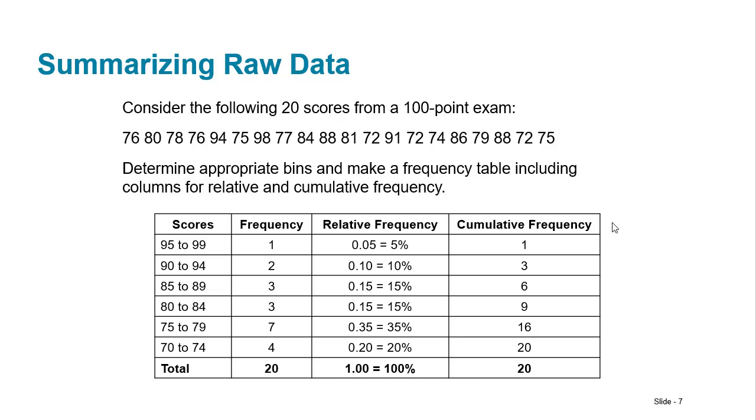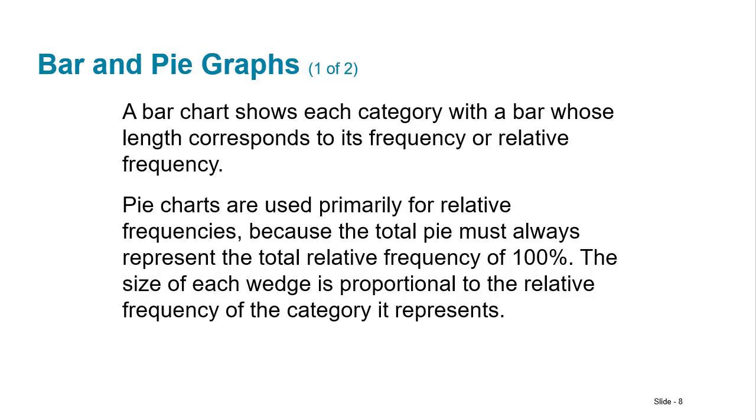And then you could also do the last one would be cumulative relative frequency. So this would be 5% then this would be 5 plus 10 is 15 and you would add the other 15 this would be 30%. Then you add 15 more. Then you add the 35 more and you get 80 and then you add in the 20 and the last one would be 100% and that's cumulative relative frequency. And those are all the things that you would ever see in a frequency table.